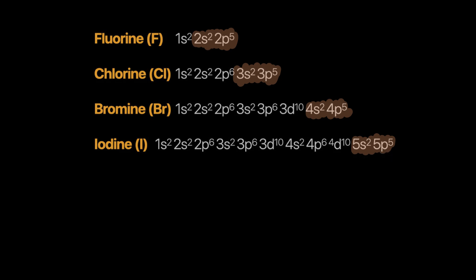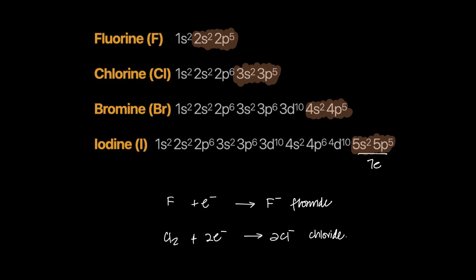All of these elements are just one electron short of an octet — they have seven electrons in the outermost shell. So each atom gains one electron: for example, fluorine gains an electron to become F⁻, the halide ion (fluoride). If they exist as diatomic molecules like Cl₂, they gain two electrons total to become two chloride ions. Generically, one atom of X gains one electron to become X⁻, the halide.